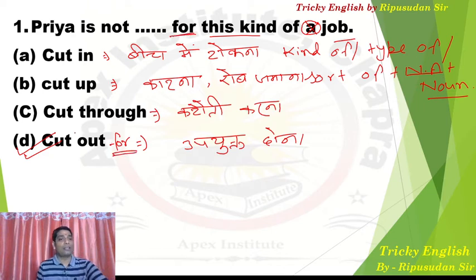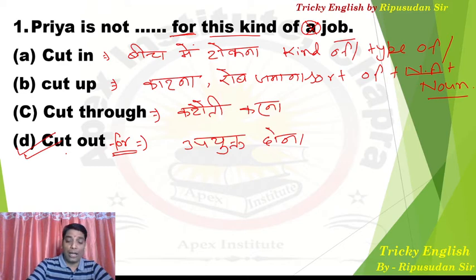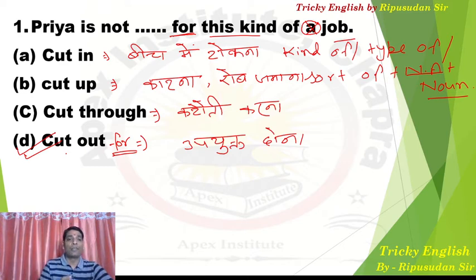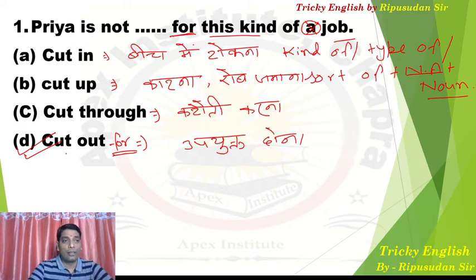Answer the questions based on meaning. If you don't remember, it will be difficult. So it's better that whenever you watch this video, sit with a copy, note everything down, and then memorize. 'Cut out' always collocates with 'for' as a fixed preposition — so 'Priya is not cut out for this kind of job' is correct.